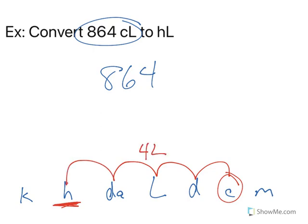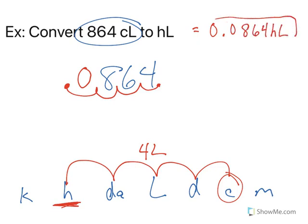So where do we see our decimal? It's at the end, because I don't see one, so it's at the end. 4 to the left. 1, 2, 3, 4. This is my new one. I have an empty hump, so I put a zero. So 864 centiliters is the same as 0.0864 hectoliters.